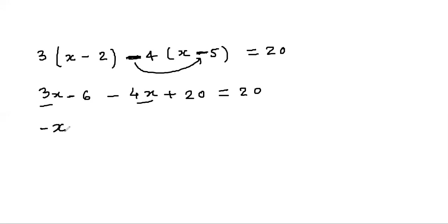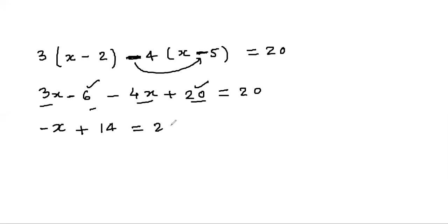So we have -x, and -6 plus 20 gives +14, equals 20. Now shift this 14 to the RHS — it will change its sign, since it is plus, it becomes minus.